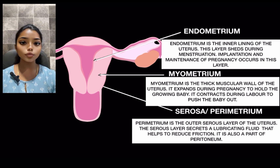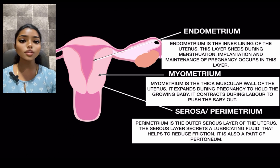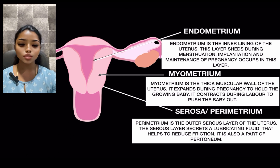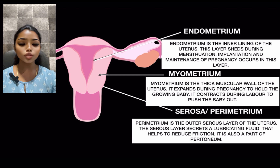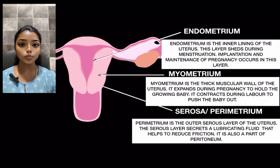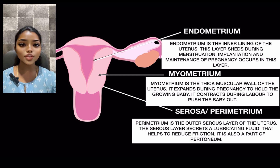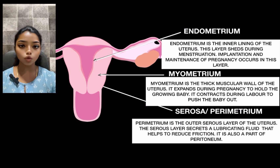Next is the myometrium. The myometrium is the middle layer of the uterus. There is a thick muscle wall that expands during pregnancy to hold the growing baby. This layer contracts during labor to push the baby out of the uterus.